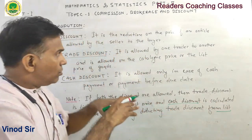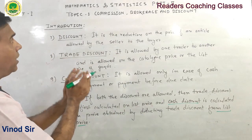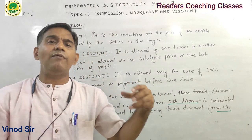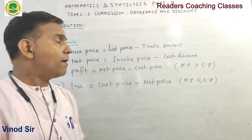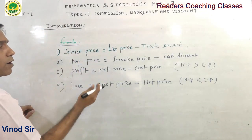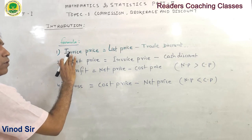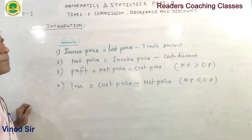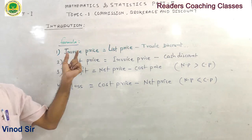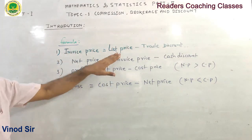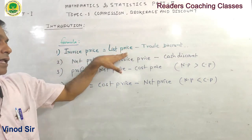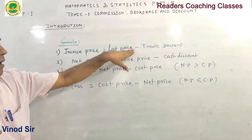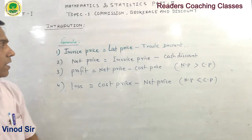These are the terms from Exercise 1.1. Now we will look at some formulas before solving the problems. Formula number one: Invoice price equals list price minus trade discount. The list price is also called the catalogue price or print price.